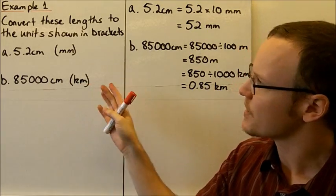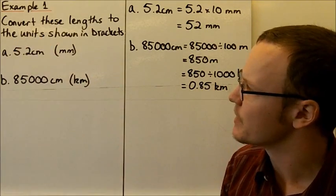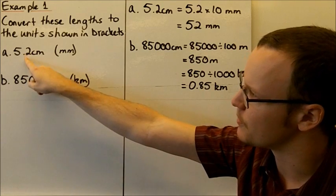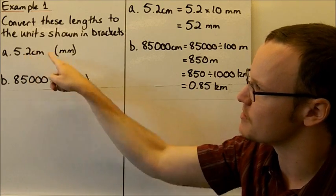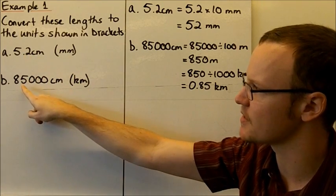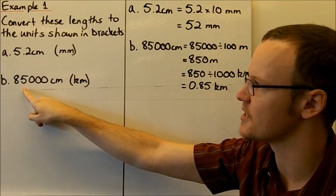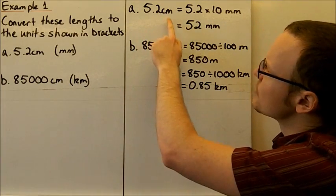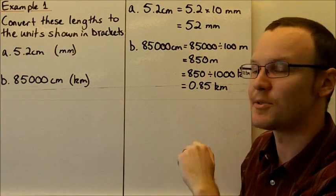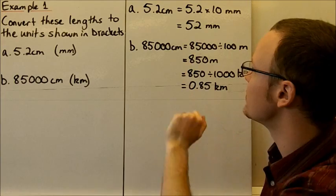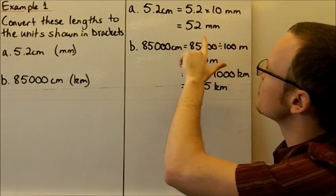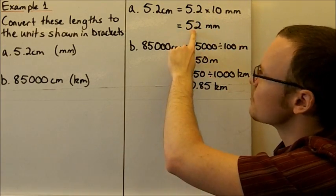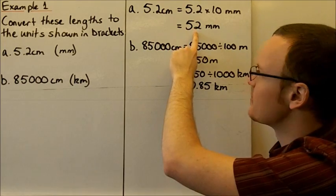Example one: we need to convert these lengths to the units shown in brackets. We need to convert 5.2 centimetres to millimetres and 85,000 centimetres to kilometres. For the first one, 5.2 centimetres — to get to millimetres we multiply by 10, so 5.2 times 10 equals 52 millimetres.